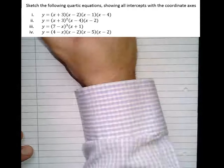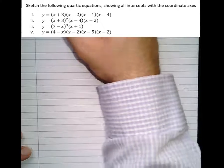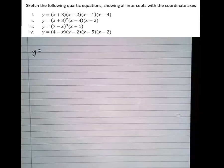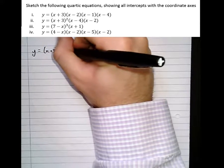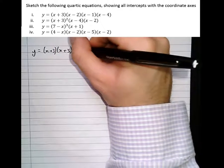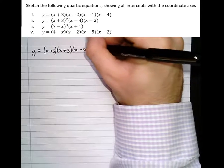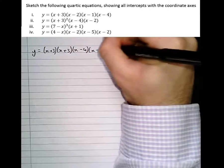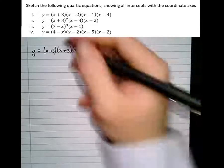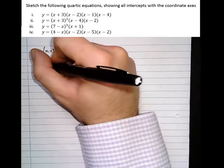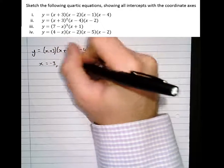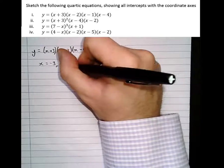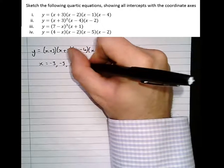So the next one is y equals, and let's write it out in full rather than write square brackets: y equals (x + 3)² so (x + 3)(x + 3)(x - 4)(x - 2). So let's find the x-intercepts. The x-intercepts when x equals minus 3, and we've got minus 3 again, a double root, 4 and 2.